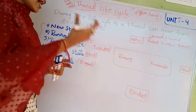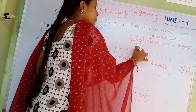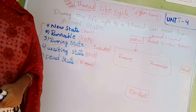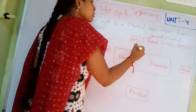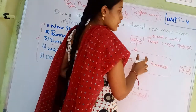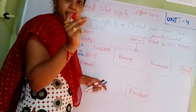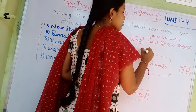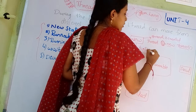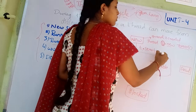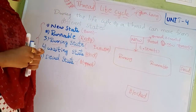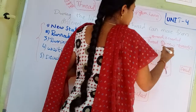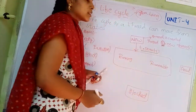After the thread is created, to start execution we use the start method. Using the object reference, we call t.start(). When t.start() is called, the thread is created and execution begins, and it will go to either the runnable state or the running state.